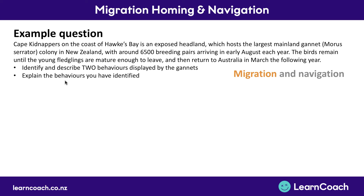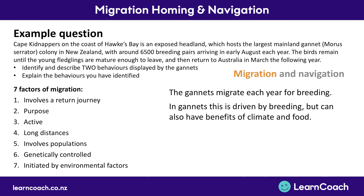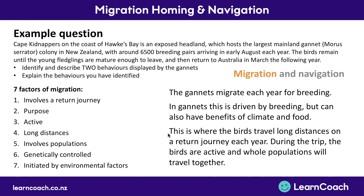For migration, we apply the seven factors to the gannet population. The gannets migrate each year for breeding — arriving every year before returning in March. This ticks all the migration factors: it's a long trip, purposeful, active, involves whole populations, genetically controlled, and initiated by environmental factors. To explain further: it's driven by breeding as the primary purpose, with benefits of climate and food as well. The birds travel long distances in a return journey every single year, and during that trip they are active and whole populations travel together.